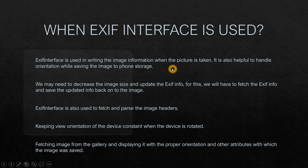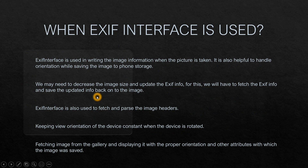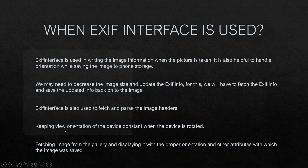ExifInterface is used in writing image information when a picture is taken. It is helpful to handle orientation when saving the image to phone storage. If we need to decrease the image size and update the EXIF info, we fetch the EXIF info and save the updated info back onto the image. It is also used to fetch and parse image headers while keeping the view orientation of the device constant when rotated.